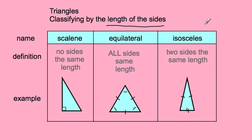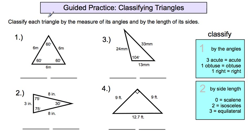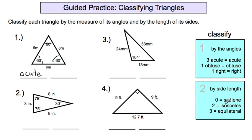Let's practice. We're going to classify each triangle by the measure of its angles and by the length of its sides. In number one, we have a 60-degree angle, another 60-degree angle, and another 60-degree angle. All of them are under 90 degrees, so when you have three acute angles, you call it an acute triangle. The sides are six meters, six meters, and six meters — three sides the same length — so that's an equilateral triangle. This is an acute equilateral triangle.